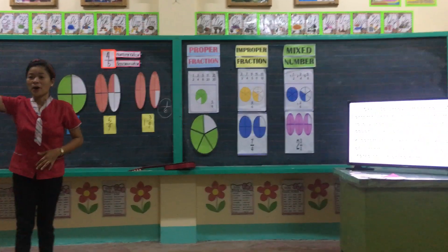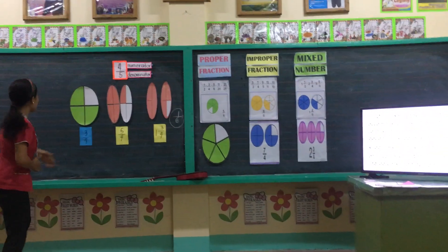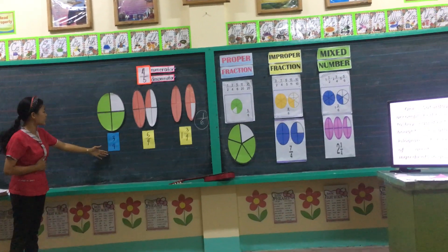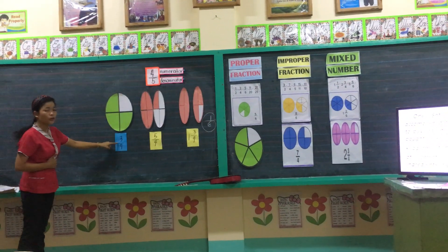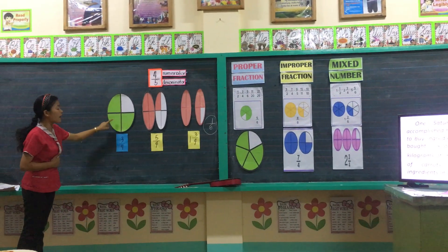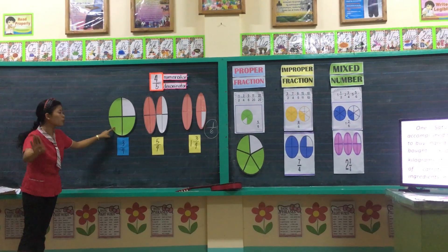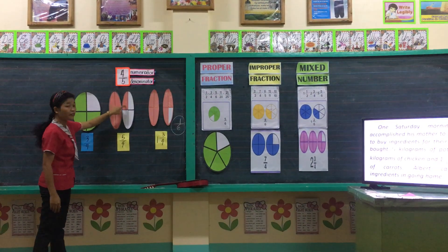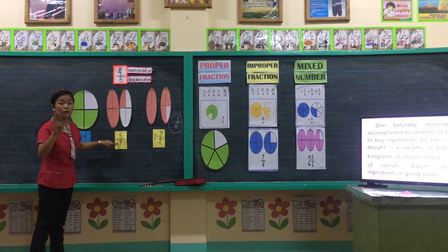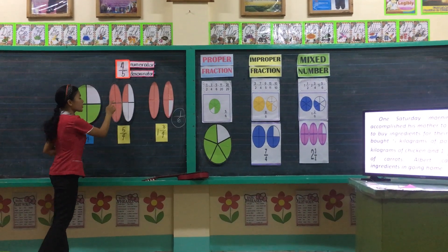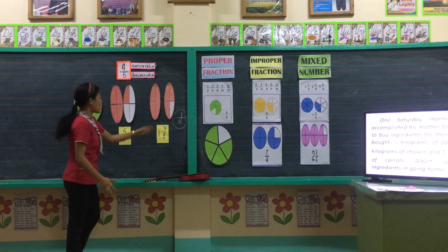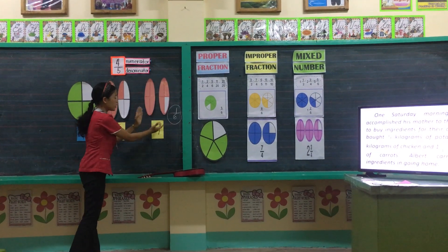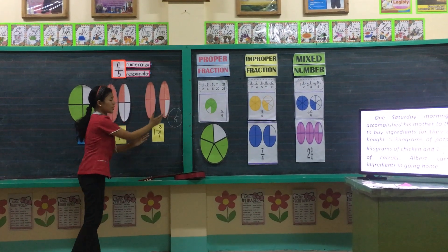We are all done. Okay, let's do the reporting. We have here the representation for three-fourths — it must be shaded into three, and it must be divided into four equal parts. Now, second: five-fourths — divided into four equal parts with five shaded. Lastly, one and three-fourths: this is one whole, and this is three-fourths.